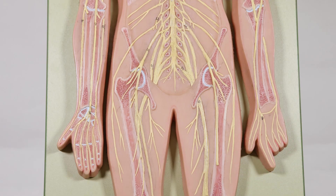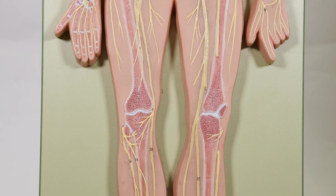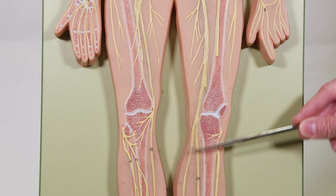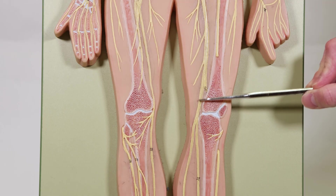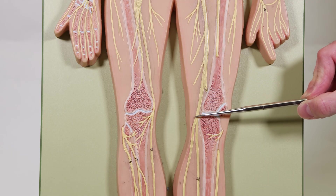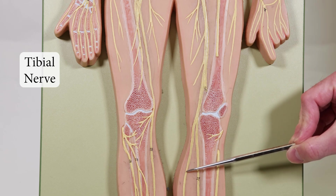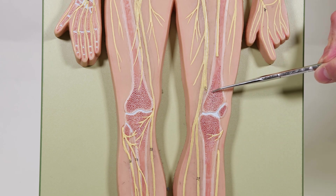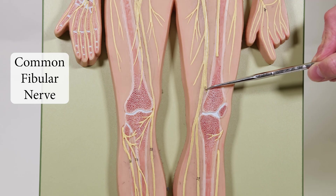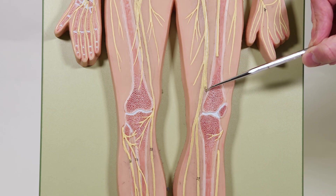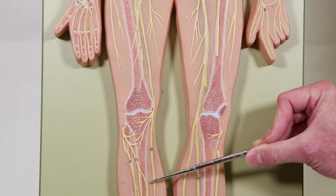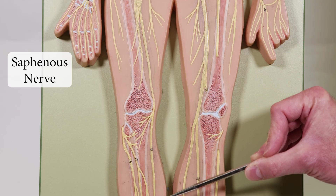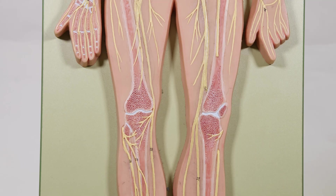The sciatic nerve, as it goes down, branches at the knee region. The one going further down is the tibial nerve; the one going behind — which is harder to see — is the common fibular nerve. Over here is the saphenous nerve. That covers the spinal cord, brain, and some select nerves of the nervous system.